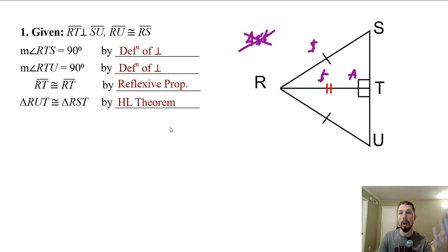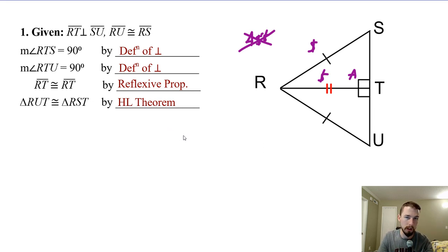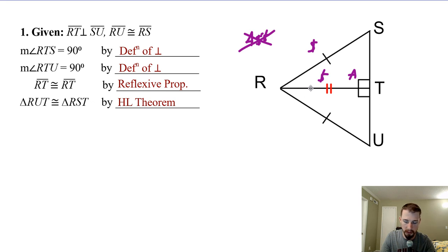The homework assignment is over the hypotenuse-leg theorem, so you're going to have a lot of that showing up. Just make sure: angle-side-side, where the angle's not in between the two sides — donkey postulate doesn't work unless we have a right angle, and then we call it the hypotenuse-leg theorem.